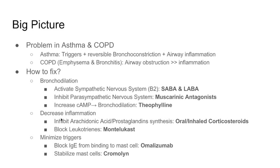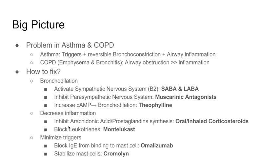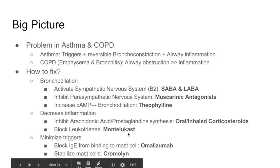The second step is to decrease inflammation. We can inhibit arachidonic acid synthesis and prostaglandin synthesis — which lead to inflammation — through oral or inhaled corticosteroids. We can also block leukotrienes, which are a product of that pathway, using antileukotrienes — mainly montelukast. The third thing we can do specifically in asthma is minimize triggers. We can block IgE from binding to mast cells — mast cells release histamine, which causes bronchoconstriction — using a drug called omalizumab. We can also give cromolyn to stabilize the mast cell.